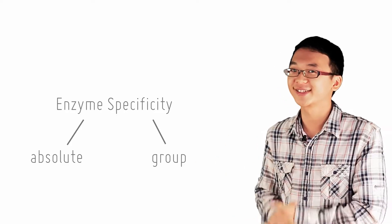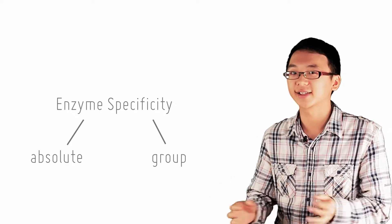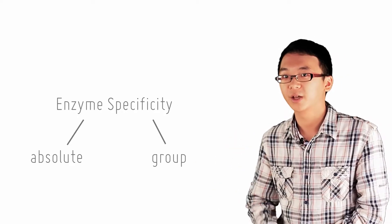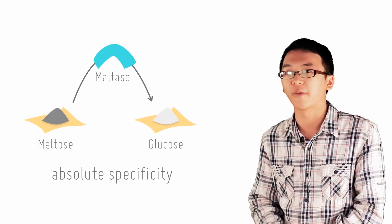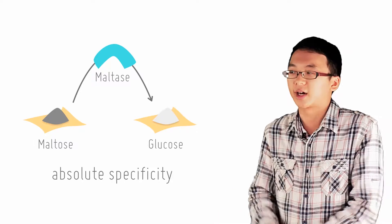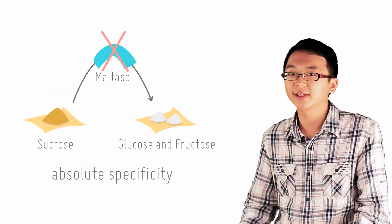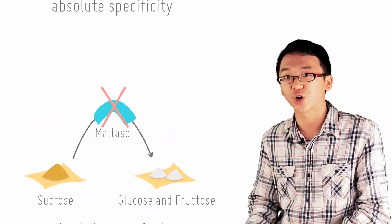Absolute specificity is when an enzyme catalyzes a single specific reaction. For instance, the enzyme maltase can only catalyze the conversion of maltose into glucose. It can't catalyze anything else. The enzyme does this by recognizing the structure of maltose.